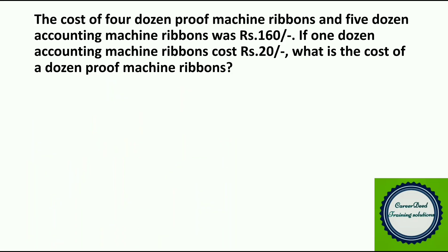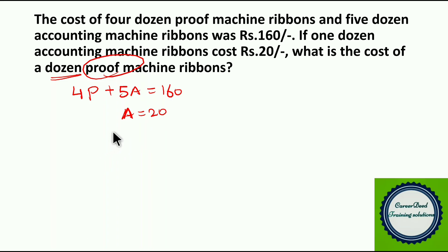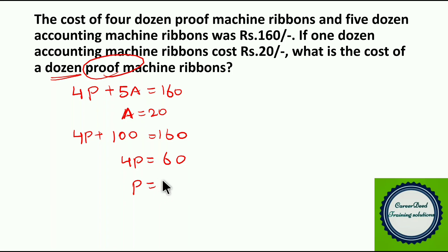Moving to question number 10. The cost of 4 dozen proof mason ribbons and 5 dozen accounting mason ribbons was Rs. 160. If 1 dozen accounting mason ribbons cost Rs. 20, what is the cost of 1 dozen proof mason ribbons? Let P be the price of 1 dozen proof ribbons. Then 4P plus 5 into 20 equals 160. So 4P plus 100 equals 160, giving 4P equals 60, so P equals 15 rupees per dozen.